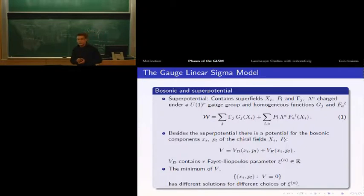Besides the superpotential, we have a bosonic potential which splits into two terms. The first term contains Fayet-Iliopoulos parameters - we have precisely R of them. The minimum of this bosonic potential depends on the choice of R Fayet-Iliopoulos parameters psi. Different choices give different vacua.